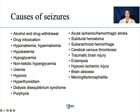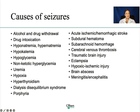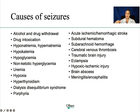What causes a seizure? So many things. Anything that can interrupt the normal connections between nerve cells in the brain can cause a seizure. Some causes include alcohol or drug withdrawal, drug intoxication, any electrolyte imbalance, uremia — which is the buildup of toxins in the blood. Porphyria is when the body cannot convert compounds called porphyrins into heme, which is a blood portion. Most of these patients during a porphyria attack will have hyponatremia, and hyponatremia can lead to miscommunication on the nerve cells, which can lead to a seizure. That's why porphyria is one of the causes.